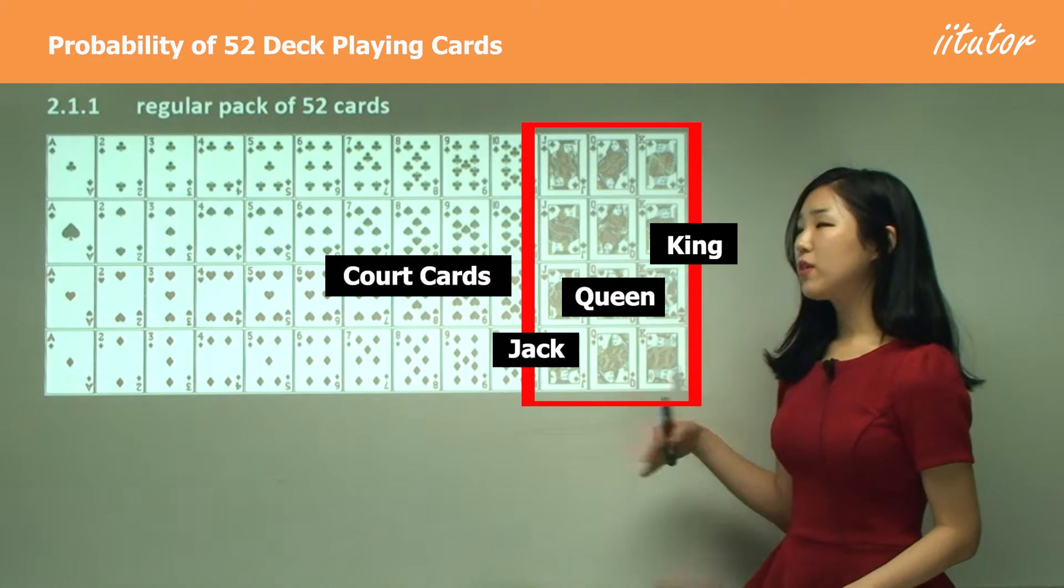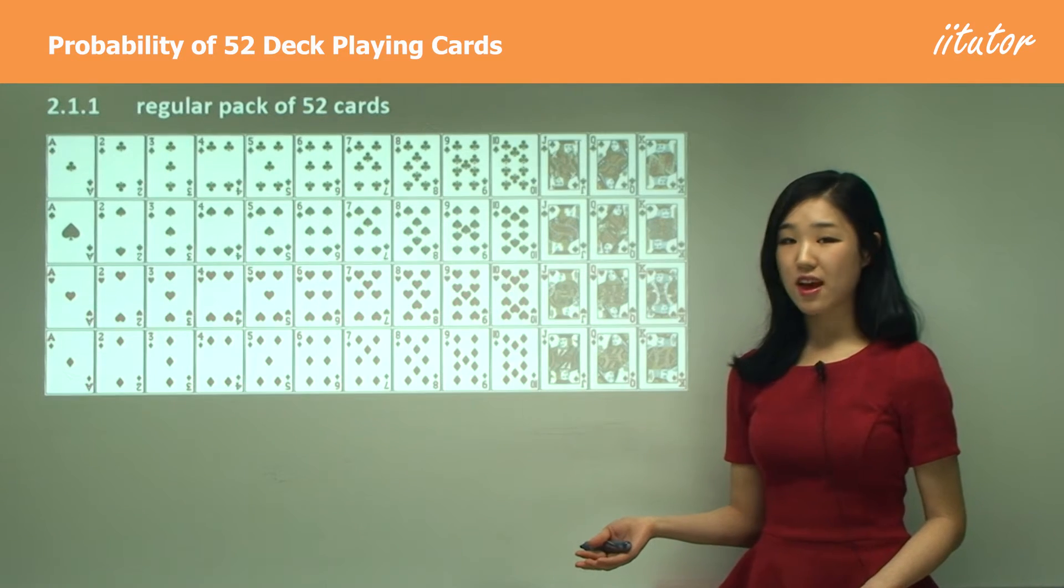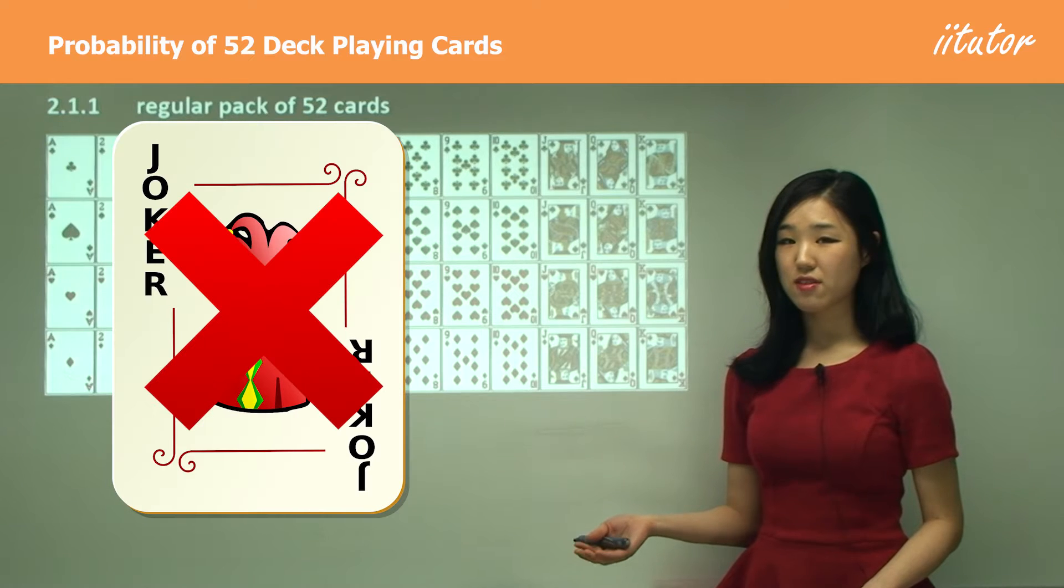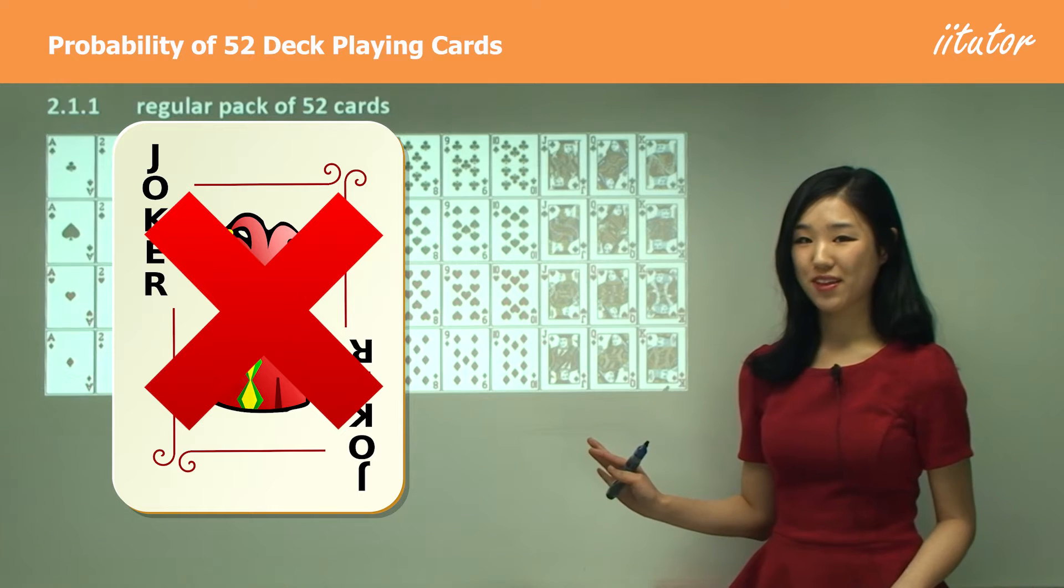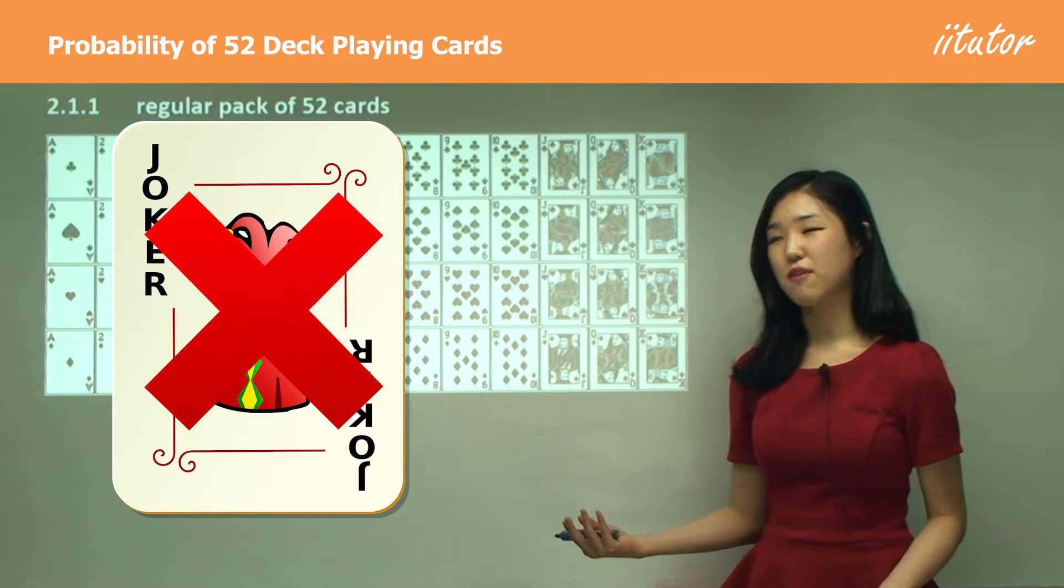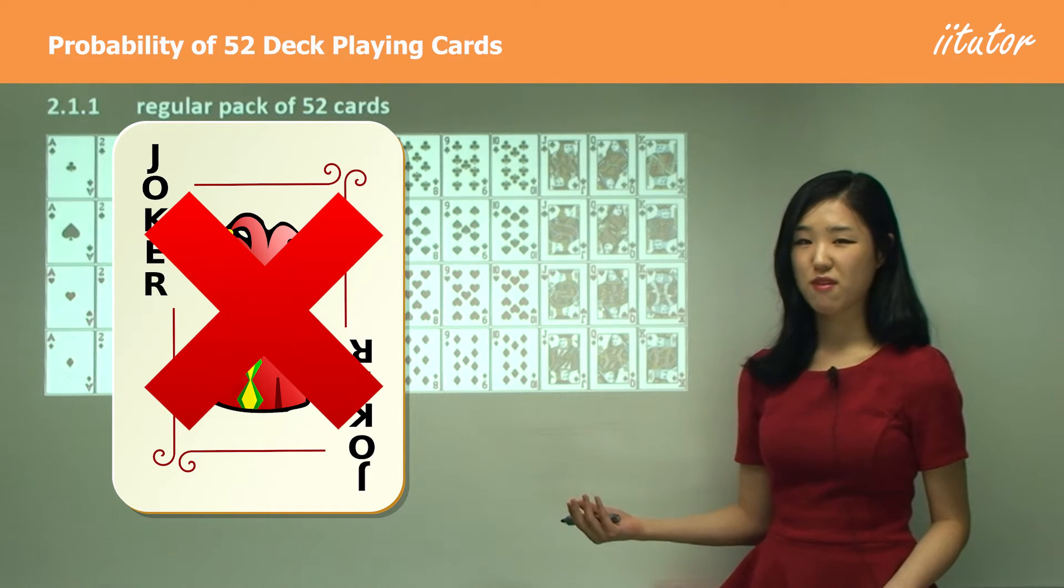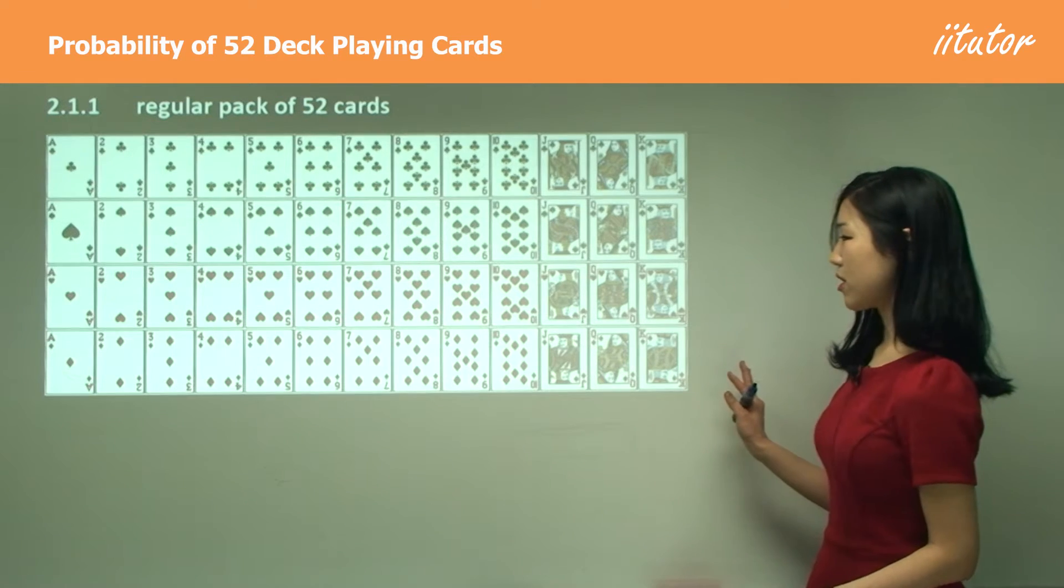When we're looking at probability, we don't consider any jokers. So don't think that there's any jokers in the cards—they're always neglecting jokers. Don't worry about jokers in any probability questions unless they do specify, but it's really rare for them to specify any jokers. This is all you need to consider.